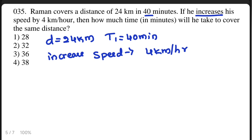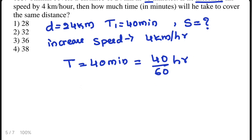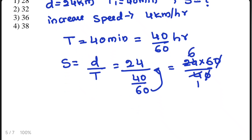First, find the original speed. Convert 40 minutes to hours: 40/60. Speed = Distance / Time = 24 ÷ (40/60) = 24 × 60 / 40 = 36 km per hour. With the speed increase of 4 km/h, the new speed = 36 + 4 = 40 km per hour.